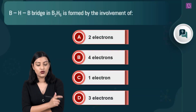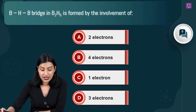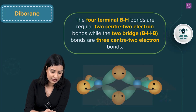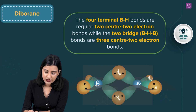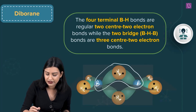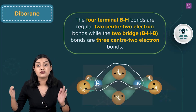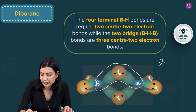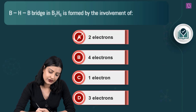The final question asks how many electrons are involved in the formation of the B-H-B bridge bond in B₂H₆. The terminal bonds are normal two-center two-electron bonds. The bridge bond is different: it involves three centers (boron, hydrogen, boron) but only two electrons — a three-center two-electron bond. Therefore, two electrons are involved, and option A is correct.